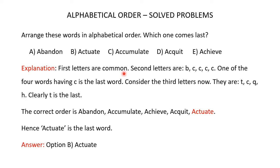So you have to consider the second letter. The second letters are B, C, C, C, and C. Since B comes before C in the alphabetical series, clearly one of the 4 words having C as the second letter is the last word.